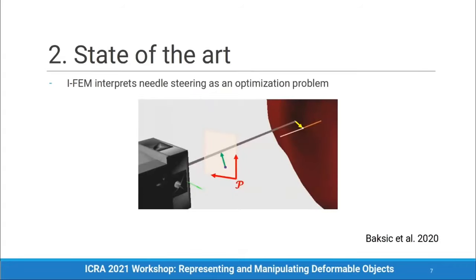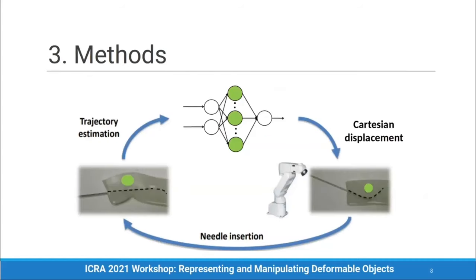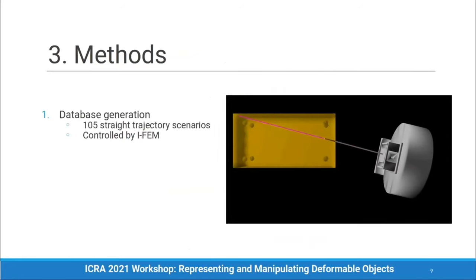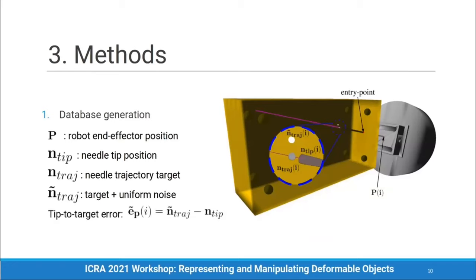IFEM interprets needle steering as an optimization problem, computing an end effector position that minimizes three objectives: the tip-to-target error along the trajectory, the entry point motion, and the tangential efforts felt at the entry point. The solution is currently limited by simulation complexity and can run at 20 Hz. To perform robotic control, we propose using a machine learning model to solve the inverse problem and command the robotic end effector at a higher rate. The method learns from IFEM demonstrations along 105 straight trajectories.